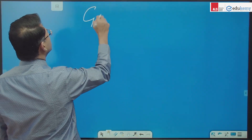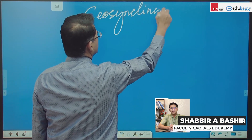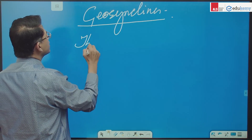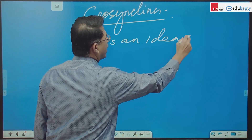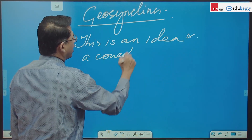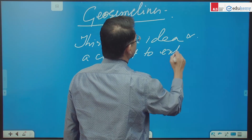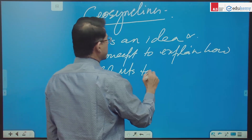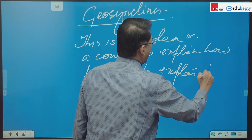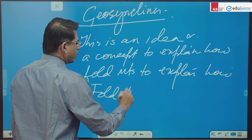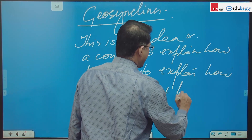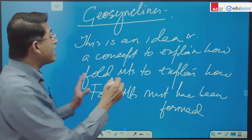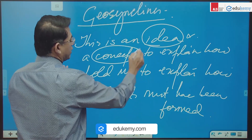Let us start with what are geosynclines. Geosynclines is an idea and a concept to explain how fold mountains must have been formed. It's an idea, remember this — it's a concept.